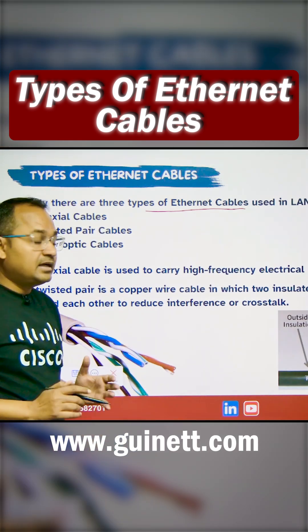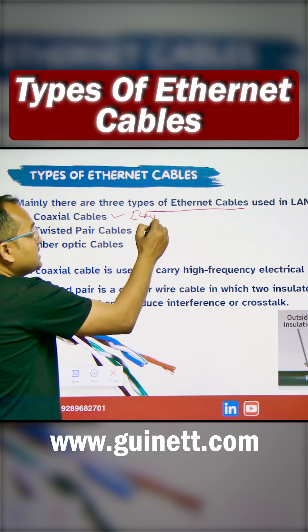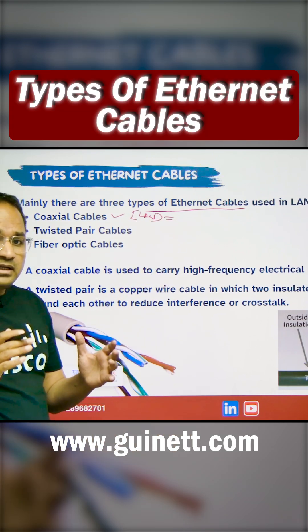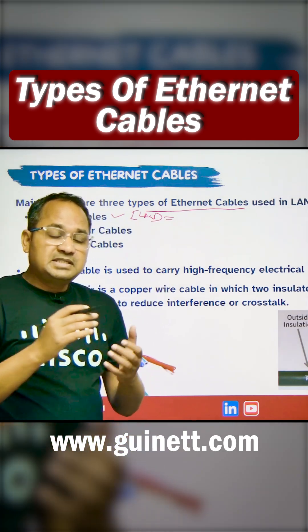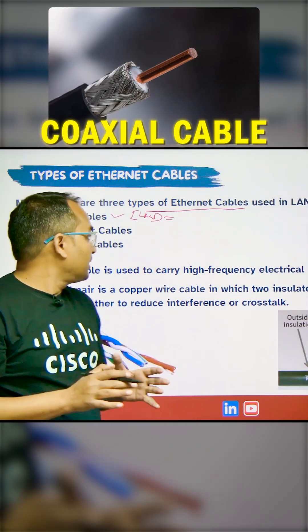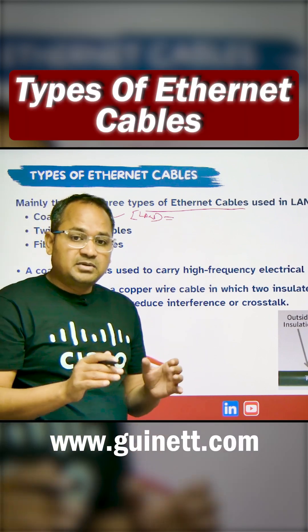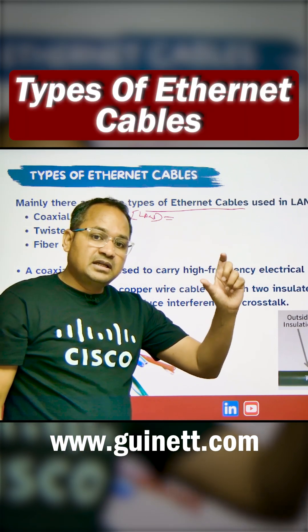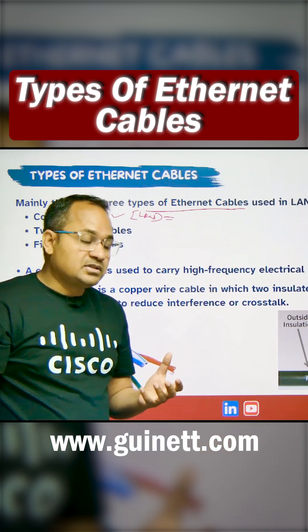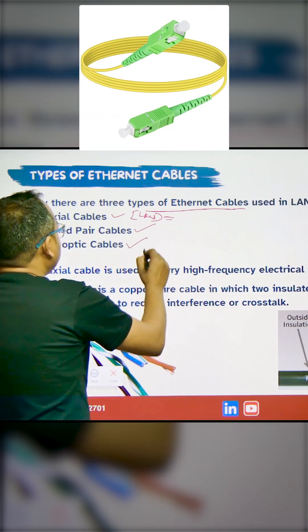For example, we have the coaxial cable. This is not technically for LAN — it is a communication method used for connectivity. If you have an antenna and want to get signals inside your television, that is what coaxial cables are used for.